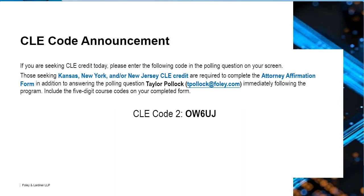Pardon the interruption. At this time I'll announce the second CLE code. For those seeking CLE credit today, please type the following five-digit code in the polling box on your screen and record it on your attorney affirmation form, if applicable, which can be found on the Resources tab on your screen. The second code is O as in Oscar, W as in William, 6, U as in uniform, J as in John. Please record this code in the appropriate places.